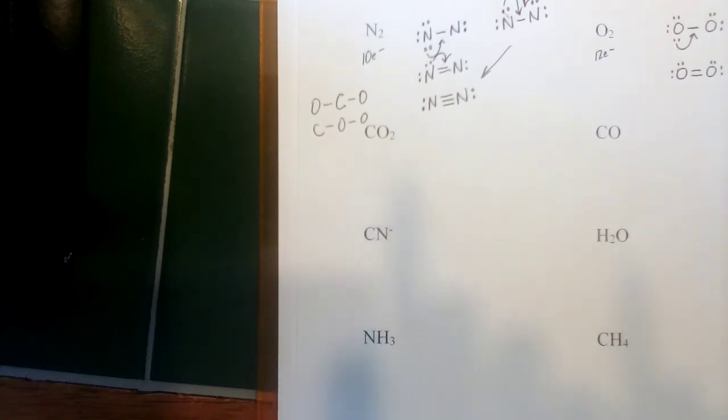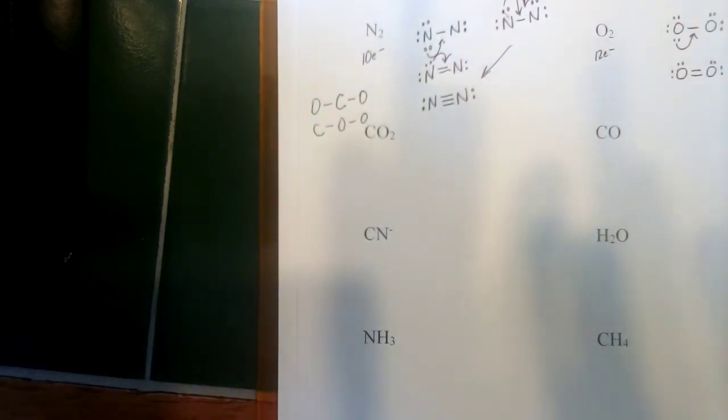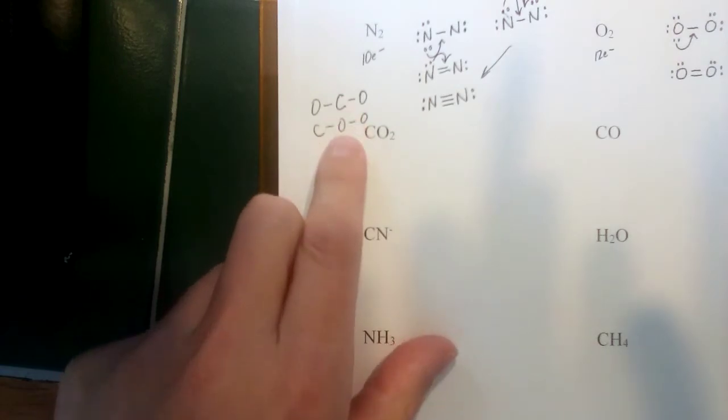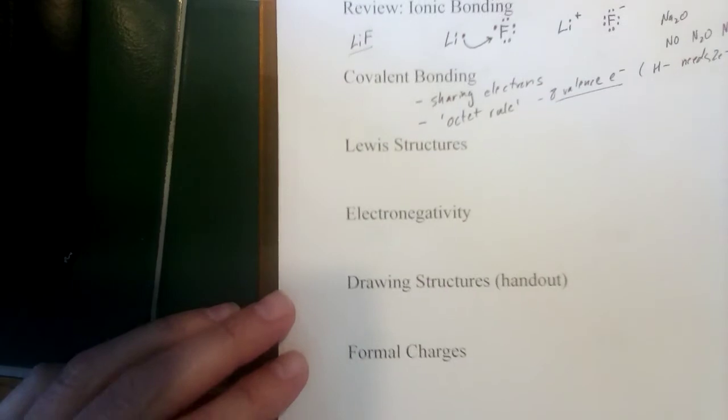If you look on your writing Lewis structures handout, the first rule to draw the skeletal structure of the compound says draw a single bond between the central atom and each of the surrounding atoms. We did that for both of those cases. But then it says for multi-atom molecules, place the least electronegative element in the center of the structure. So which one is less electronegative, carbon or oxygen? We're going to have to talk about electronegativity to figure that out. So we're going to hop back over to the first page of the lecture notes. I've got a little section on electronegativity here.